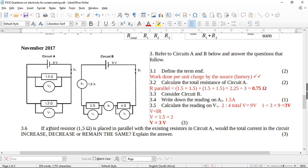Now, it says to you, if a third resistor, 1.5 ohms, is placed in parallel with the existing resistors in circuit A, would the total current in the circuit increase, decrease, or remain the same? Look here. It's asking you for a parallel resistor, but it's asking you what happens to the current. So for three marks here, you need to explain in a logical fashion.